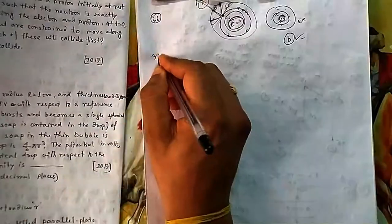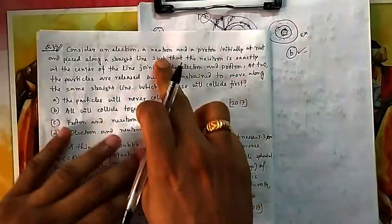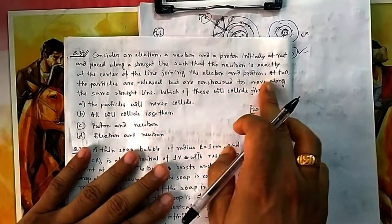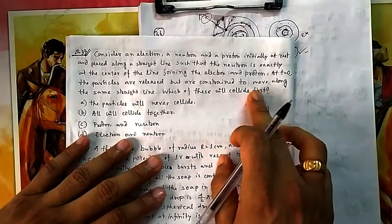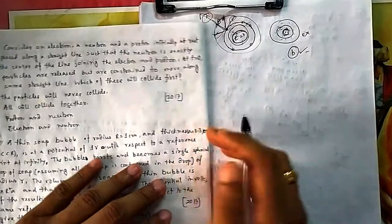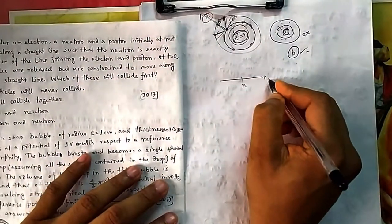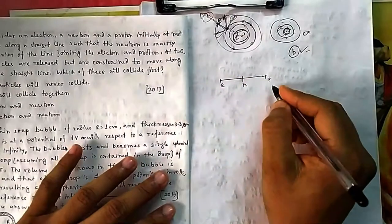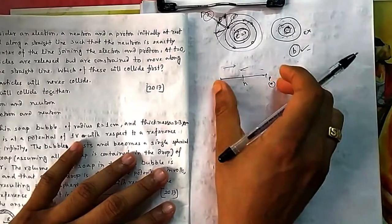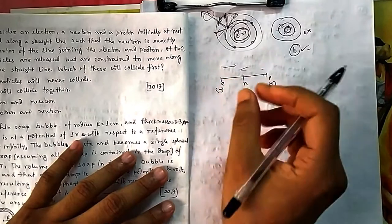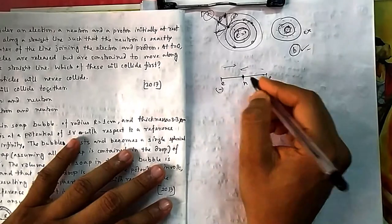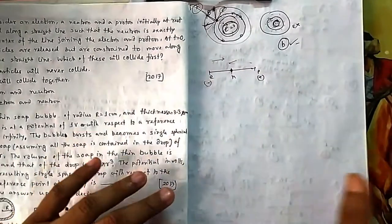For question 37: consider an electron, neutron, and proton initially at rest placed in a straight line such that the neutron is exactly at the center. At t = 0 they are released but constrained to move along the same straight line. Which particles will collide first? The proton is positive, electron is negative, neutron is neutral. The proton and electron attract each other and both move toward the neutron in the center.